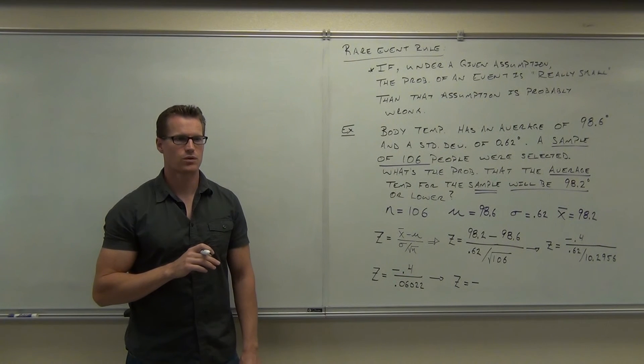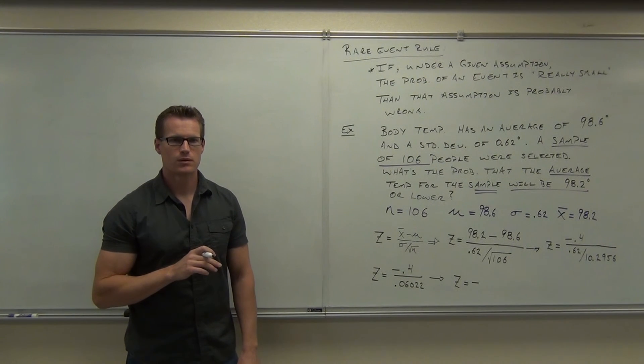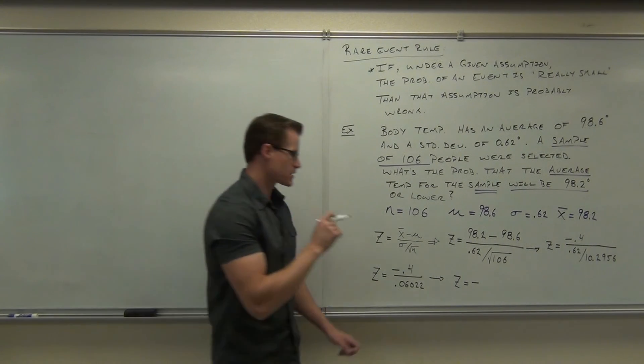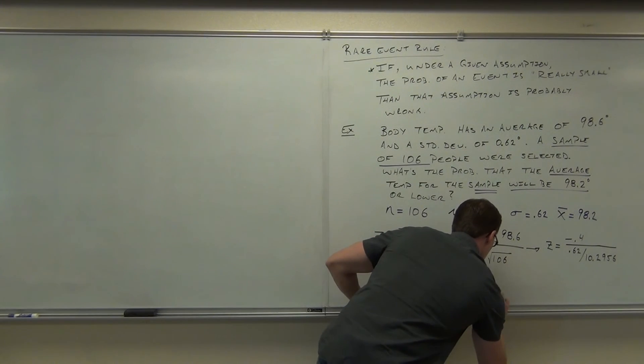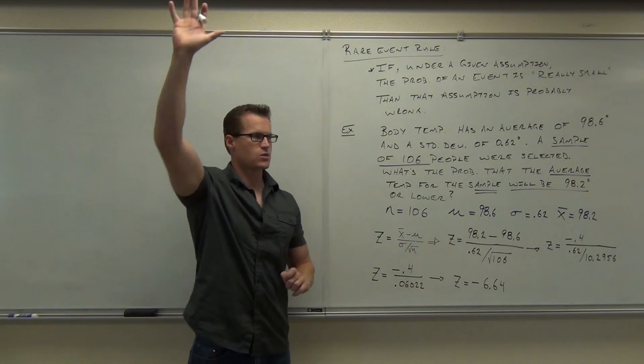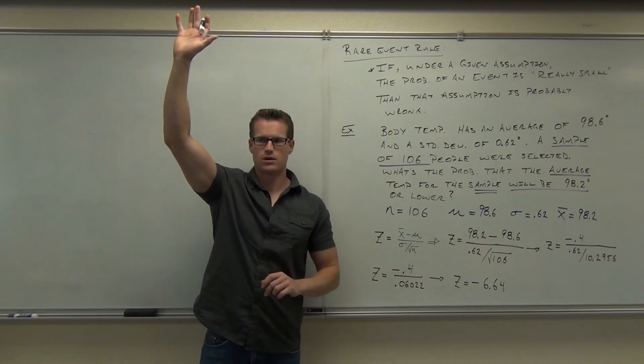Okay. How much is that z-score? Negative 6.64. Raise your hand if you're okay to get the z-score of negative 6.64. Okay.